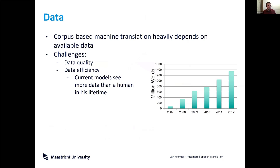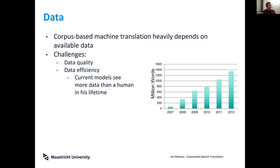One area where these models are still suffering, despite great performance, is data efficiency. When we look at how much data these models use for training, we see that even eight years ago they already used 1.2 billion words in English, and nowadays we have even more data.